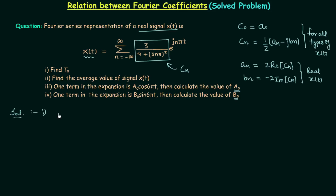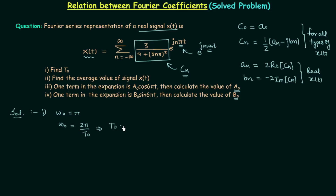First we calculate the fundamental time period T0 by finding ω0. Comparing e^(jnπt) with the general form e^(jnω0t), we find ω0 = π. Since ω0 = 2π / T0, we get T0 = 2π / ω0 = 2π / π = 2 seconds.